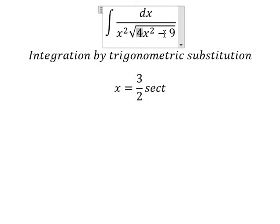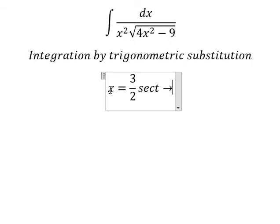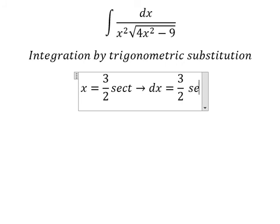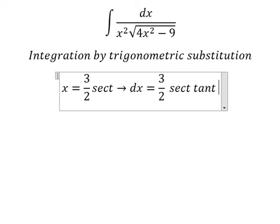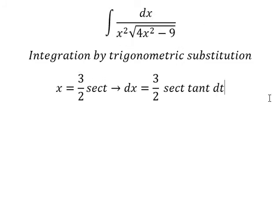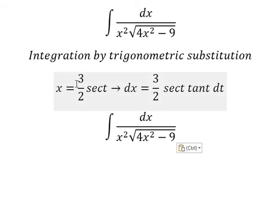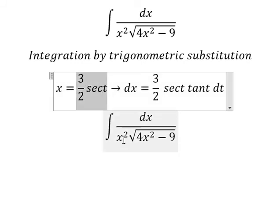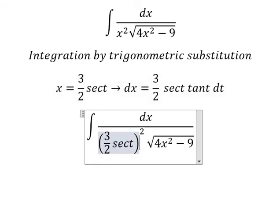Secant of t square minus 1 we change to tan t square and later we simplify the square root and dx. Next we need to do first derivative for both sides and we have secant of t tan t dt. So I will put this one going here and here.